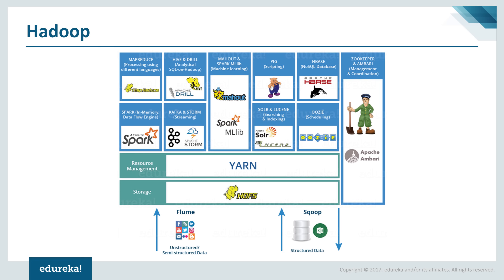Hadoop is a framework to store and process large sets of data across computer clusters. Hadoop can scale from a single computer system up to thousands of commodity systems that offer local storage and compute power. Hadoop is composed of modules that work together to create the entire framework. For example, HDFS is the storage unit of Hadoop.